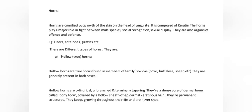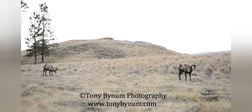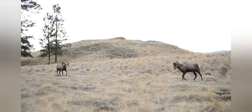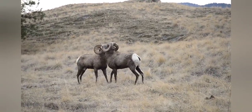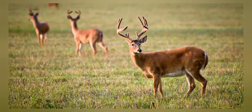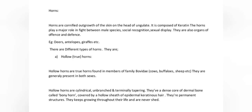Horns are cornified outgrowths of the skin on the head of ungulates. They are composed of keratin. Horns play a major role in fights between male species, social recognition, and sexual display. They are also organs of offense and defense. E.g. deer, antelopes, giraffes etc. There are different types of horns: hollow true horns.